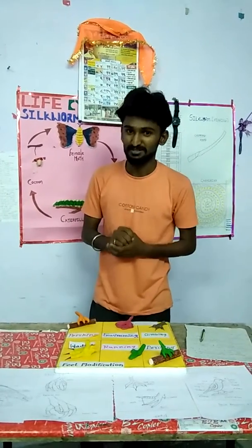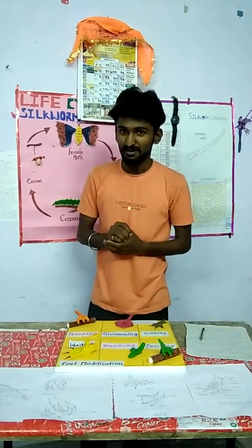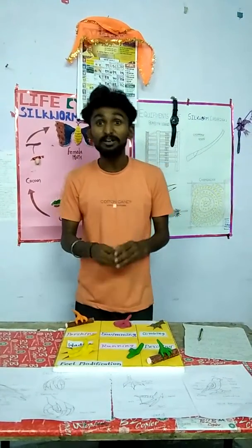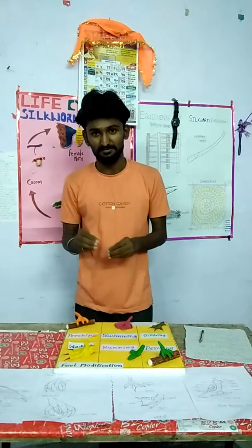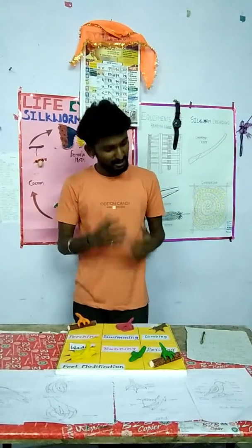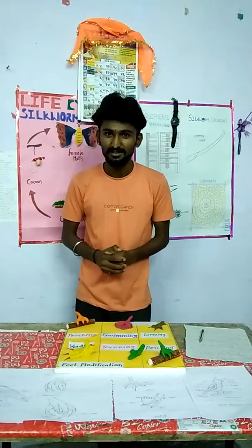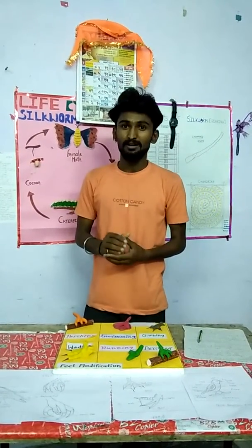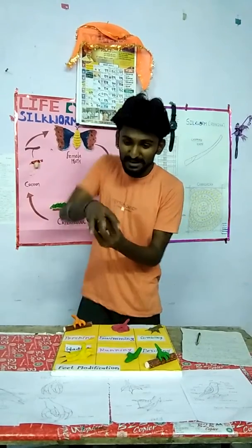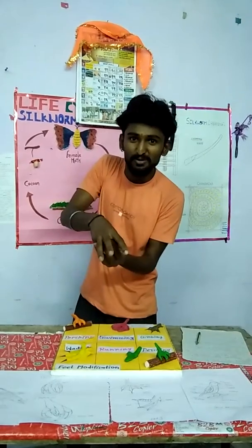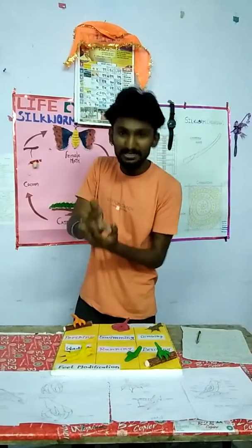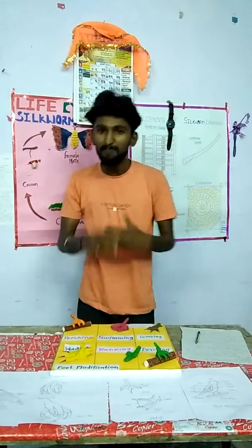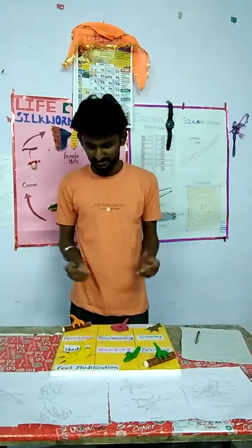Birds have four toes. They are arranged according to some patterns, like anisodactyl. In this pattern, three toes are in the front direction and one toe is in the back direction. These are found in mostly birds.